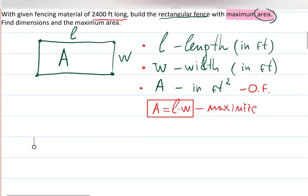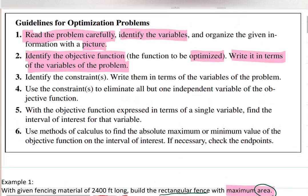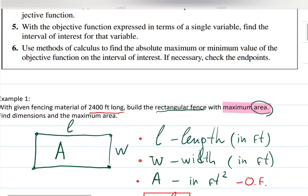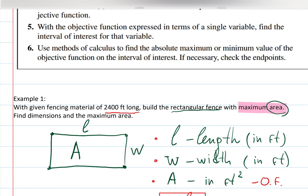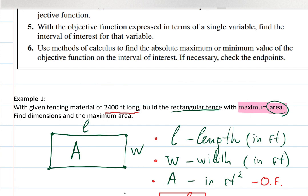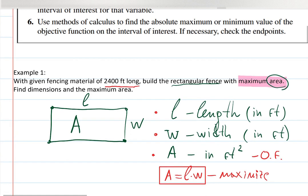One more step: identify the constraints, which are restrictions. Can I build an infinitely long fence? No — because the material is fixed at 2400 feet. Imagine placing a post, walking some amount of space, placing another post, then another, and another, until you've used all 2400 feet to build the fence.